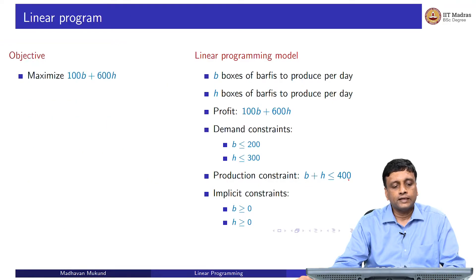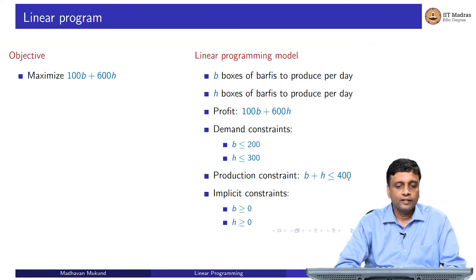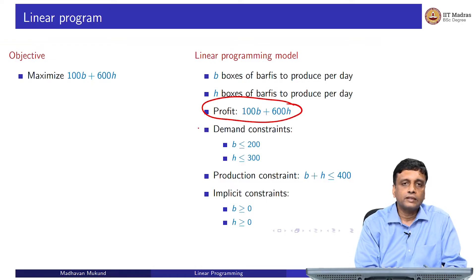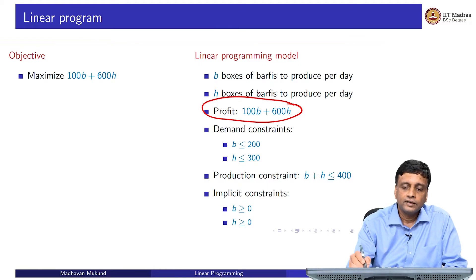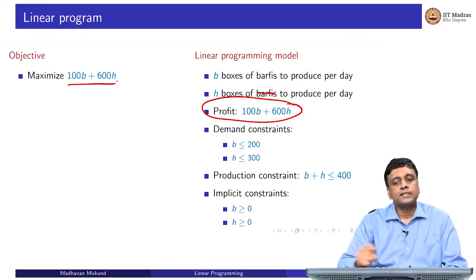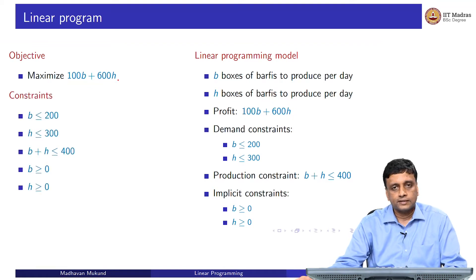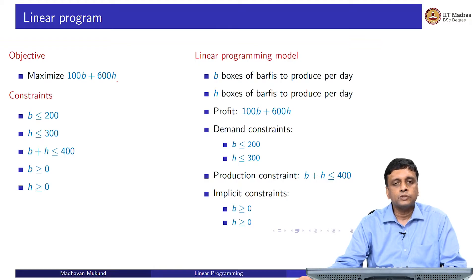Our objective is clearly to maximize profit. The profit is 100 rupees per box of burfi and 600 per box of halwa, so we want to maximize 100b + 600h subject to those constraints. This is the linear program we want to solve: a linear objective function and linear constraints — find the optimum values of b and h.